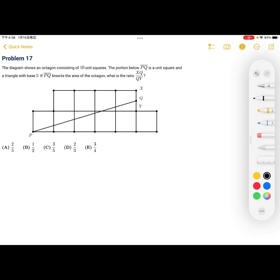Problem 17. The diagram shows an octagon consisting of 10 unit squares. The portion below the line PQ is a unit square and a triangle with a base of 5. If the line PQ bisects the area of the octagon, what is the ratio of XQ over QY?